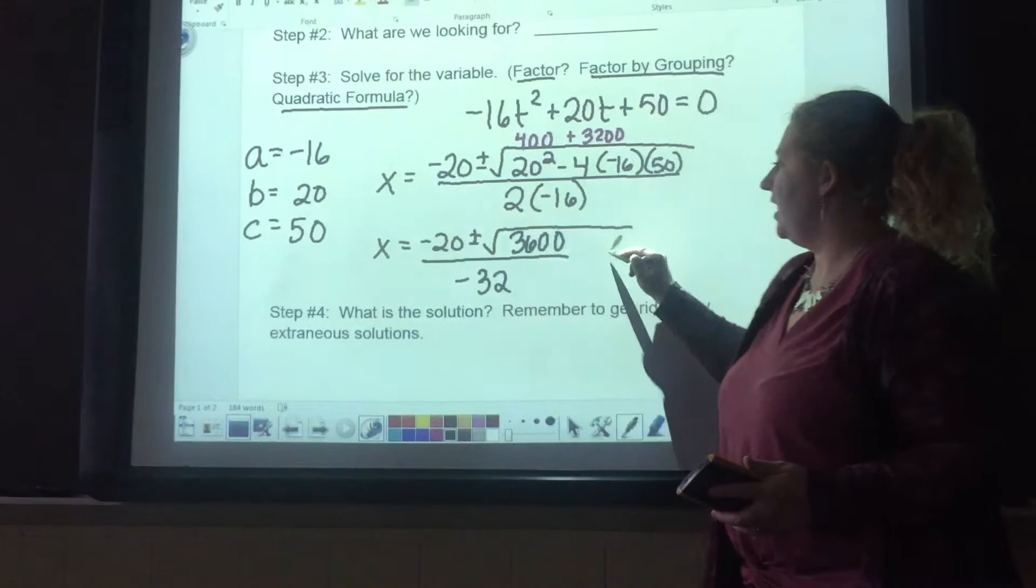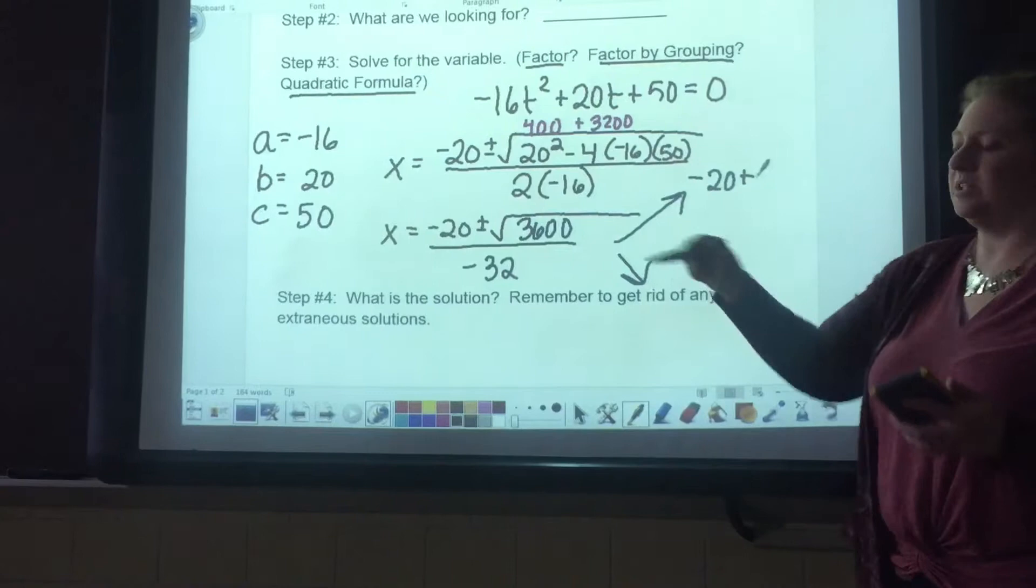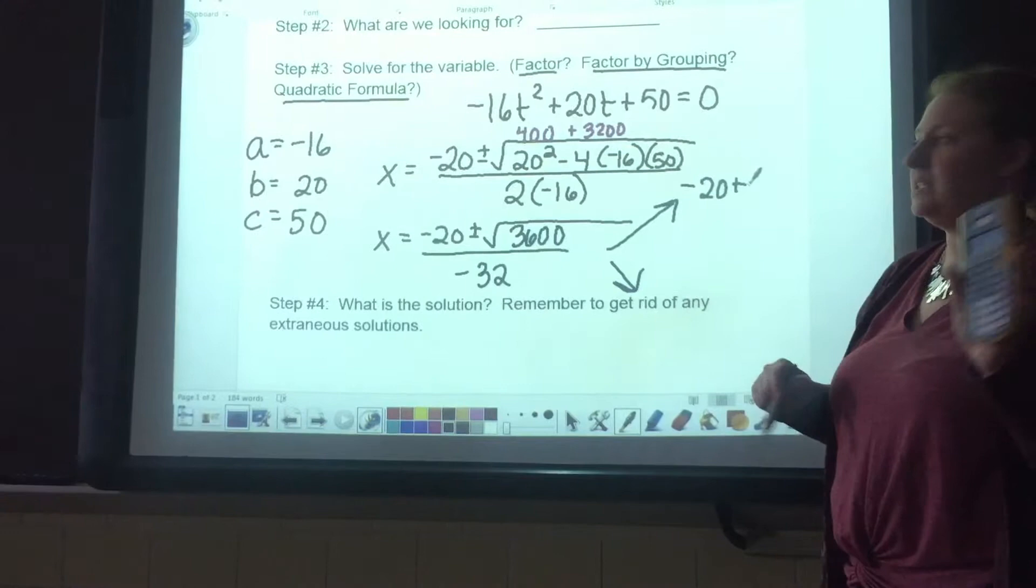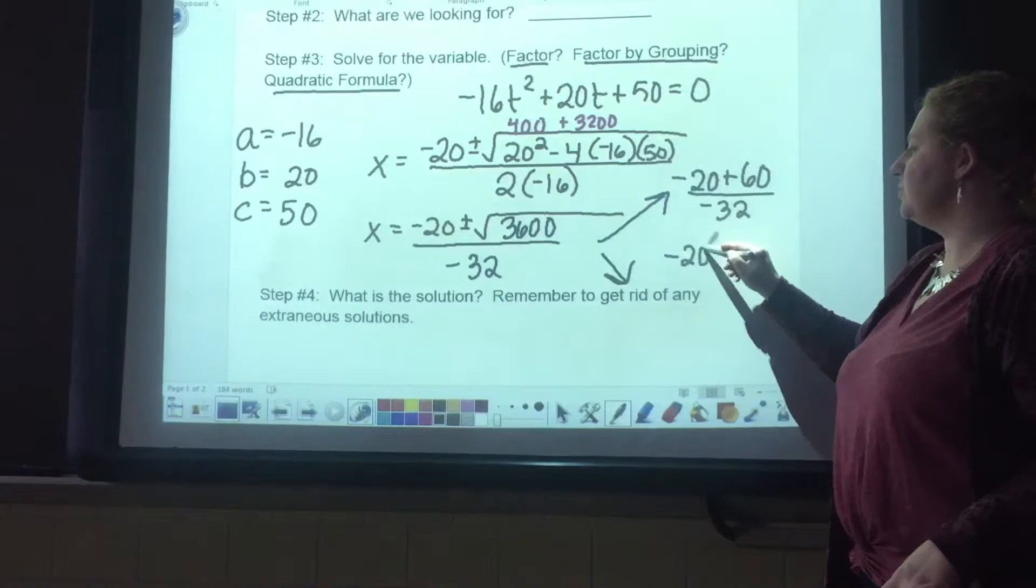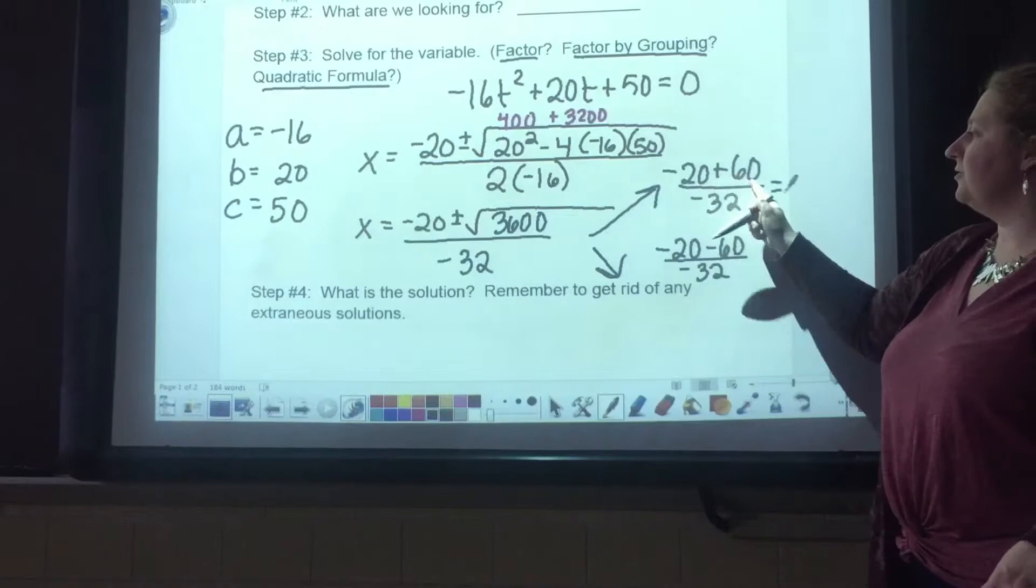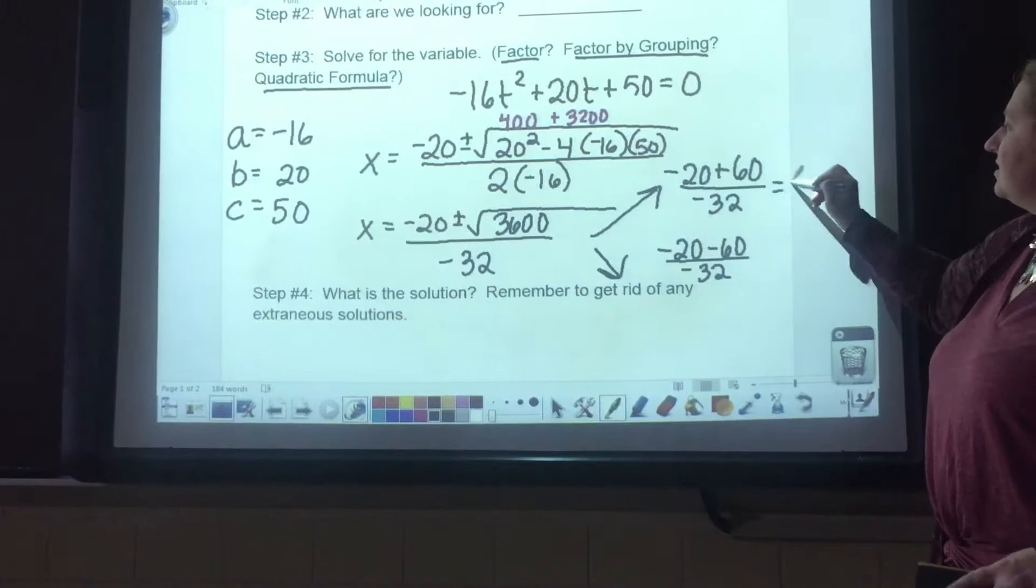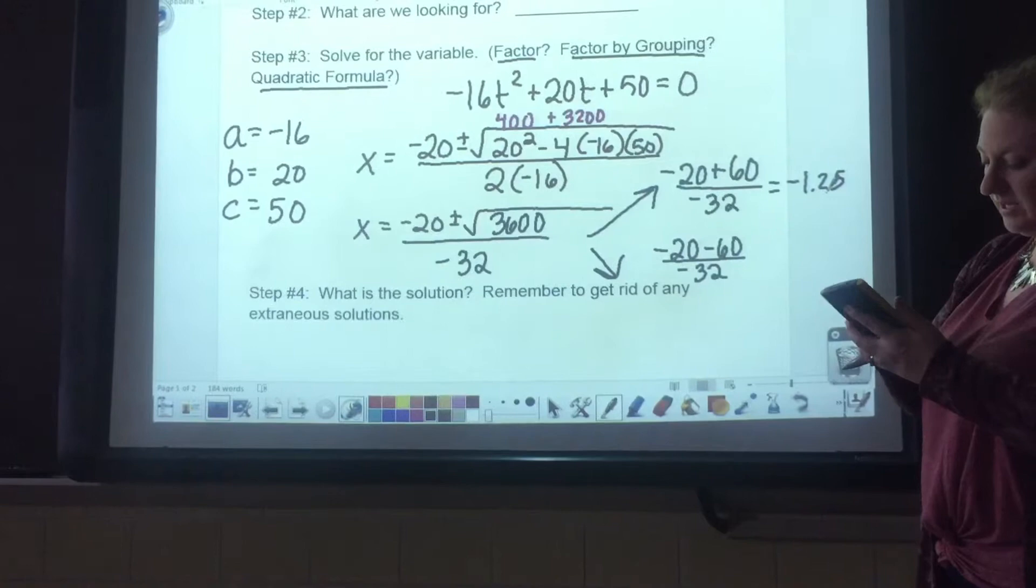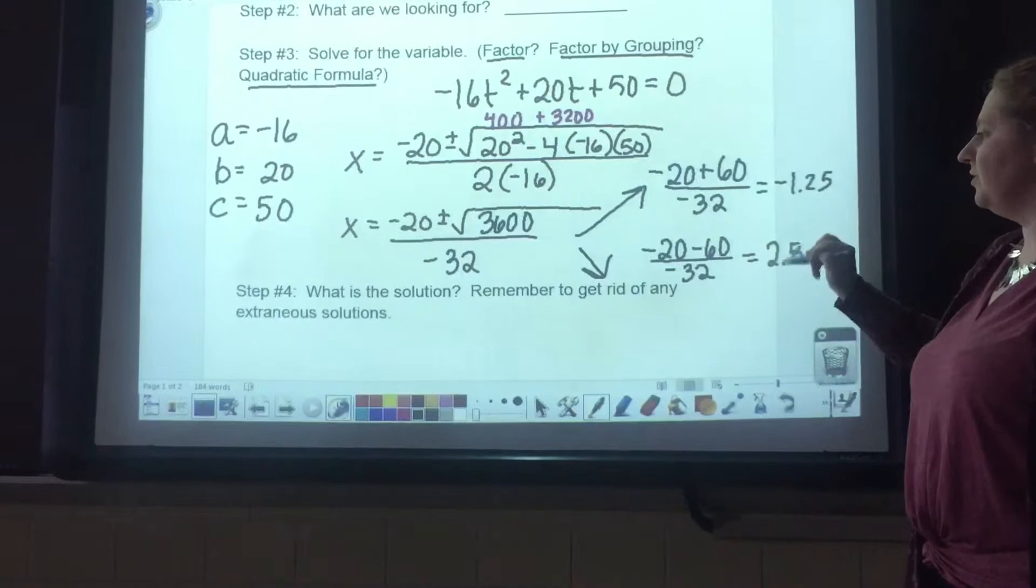I am now going to split this into two problems. I have negative 20 plus. If you take the square root of 3,600 on your calculator, you will get 60. So we have negative 20 plus 60 over negative 32, and we have negative 20 minus 60 over negative 32. For our first one, we have 40 divided by negative 32, which gives us negative 1.25. For our next one, we have negative 80 on top, and negative 80 divided by negative 32 gives us 2.5.